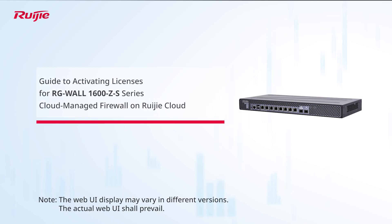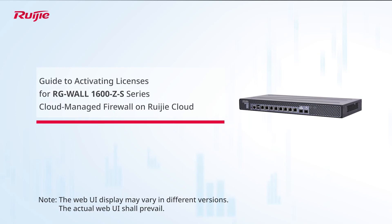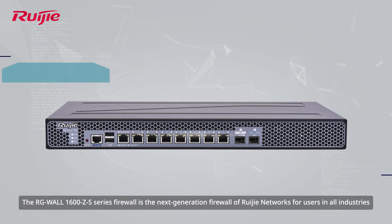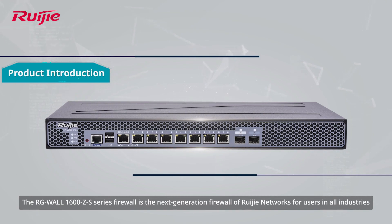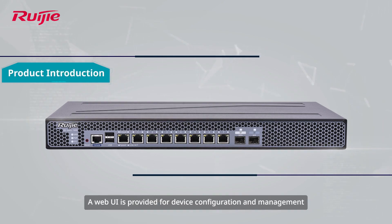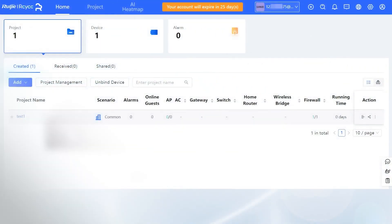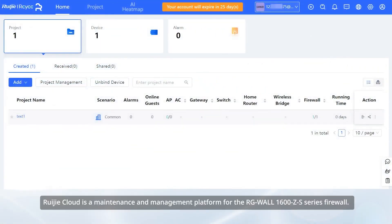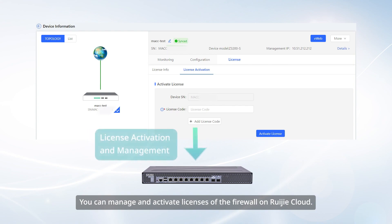This video introduces how to activate licenses on the RGWALL 1600Z S-Series Cloud-managed Firewall. The RGWALL 1600Z S-Series Firewall is the next-generation firewall of RUIGIA Networks for users in all industries. A web UI is provided for device configuration and management. RUIGIA Cloud is a maintenance and management platform for the RGWALL 1600Z S-Series Firewall, where you can manage and activate licenses of the firewall.